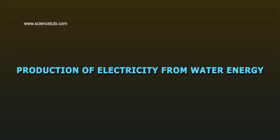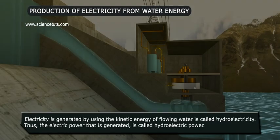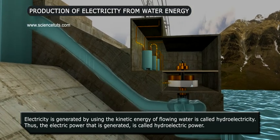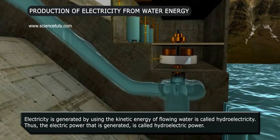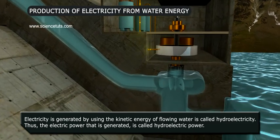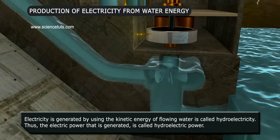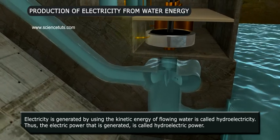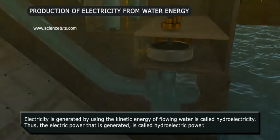Production of Electricity from Water Energy. Electricity generated by using the kinetic energy of flowing water is called hydroelectricity. Thus, the electric power that is generated is called hydroelectric power.